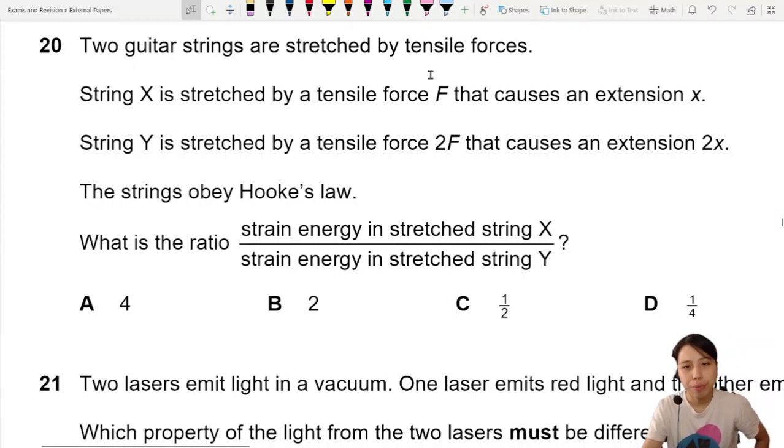Two guitar strings are stretched by tensile forces. String X is stretched by a force F that causes an extension x. String Y is stretched by a force 2F that causes an extension 2x. The strings obey Hooke's law. What is the ratio of strain energy in stretched string X to strain energy in stretched string Y?